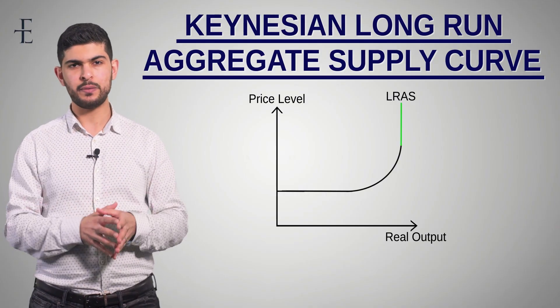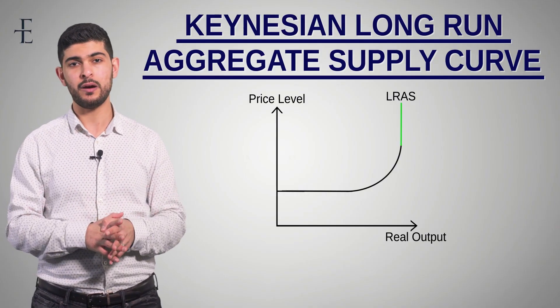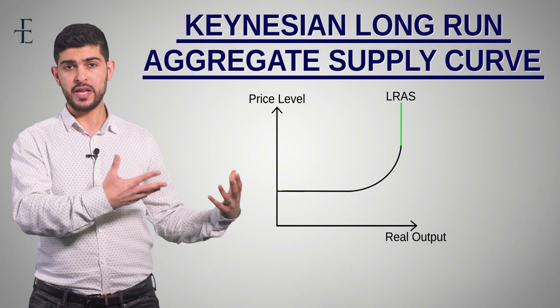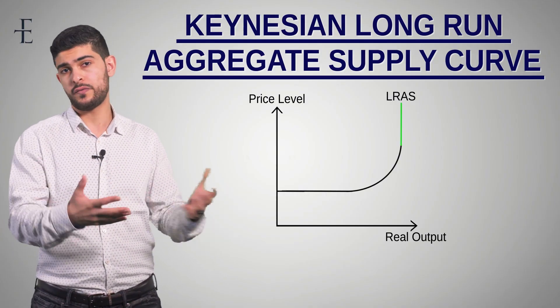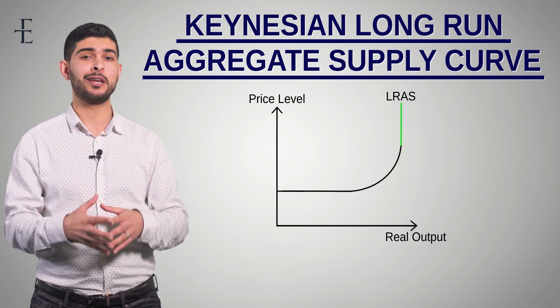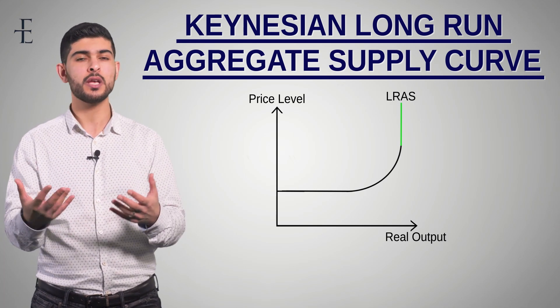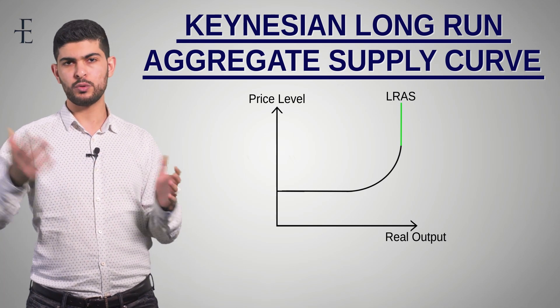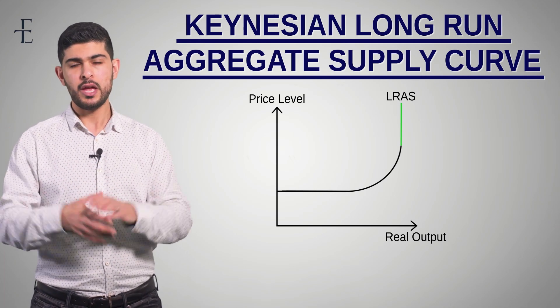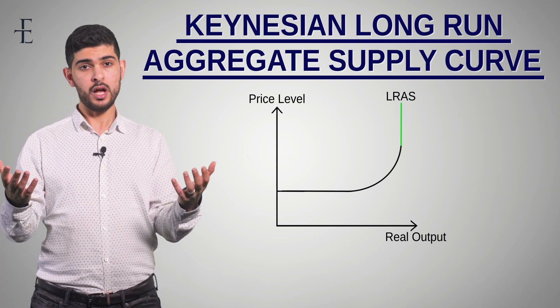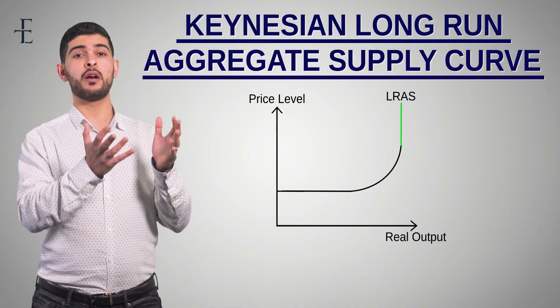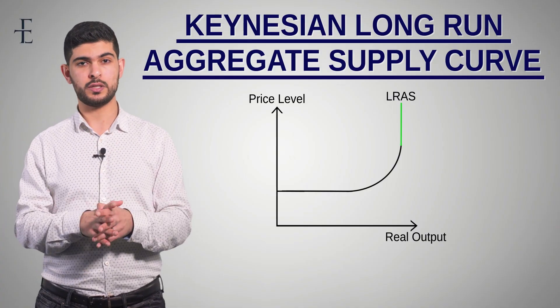The factors that shift the PPF curve out also shift the LRAS curve out. For example, if there are technological improvements, LRAS would shift out. If there's a natural disaster, LRAS would shift inwards.